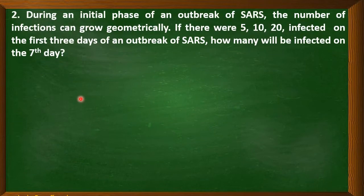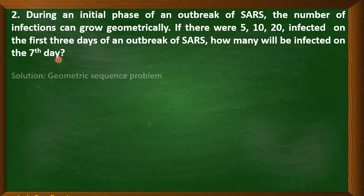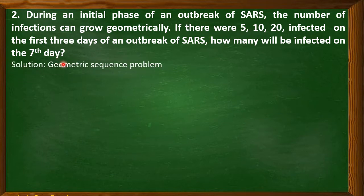Another example. During an initial phase of an outbreak of SARS, the number of infections can grow geometrically. If there were 5, 10, 20 infected on the first three days of an outbreak of SARS, how many will be infected on the seventh day? This is an example of a geometric sequence problem.